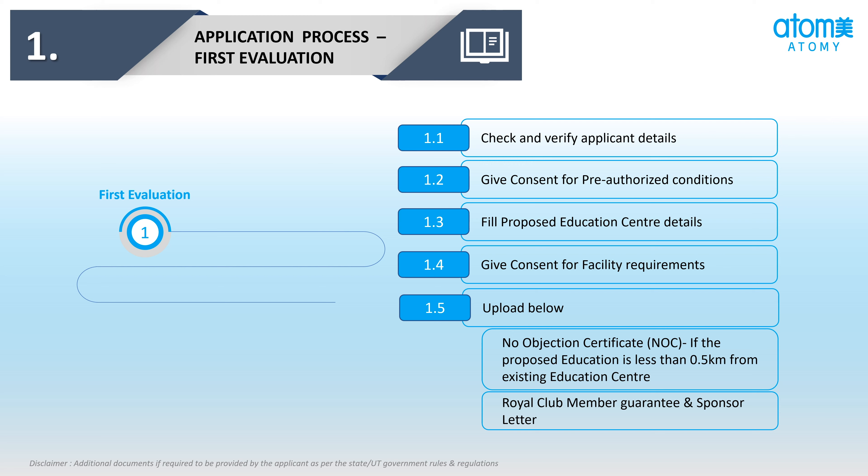अगर Proposed Education Center के आधे किलोमीटर के दायरे में कोई और Education Center है, तो उस Center Leader द्वारा No Objection Certificate की आवश्यकता होगी। Royal Club Members द्वारा Guarantee Letter और Sponsor Letter की आवश्यकता होगी। Royal Club Member की List हमारी वेबसाइट के Resource टैब में अपलोड की जाएगी।